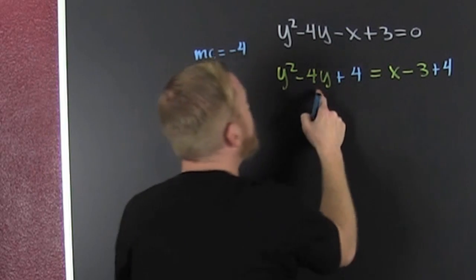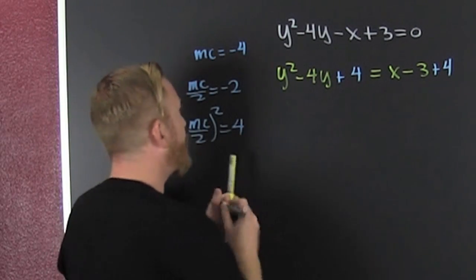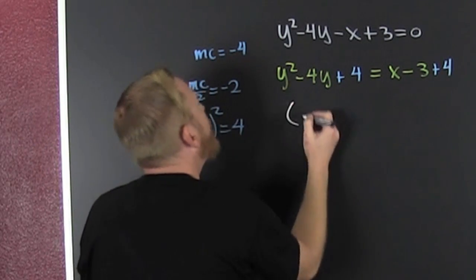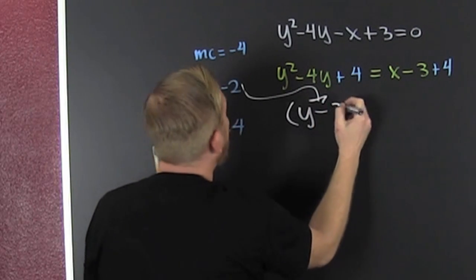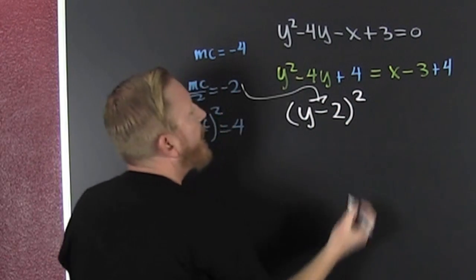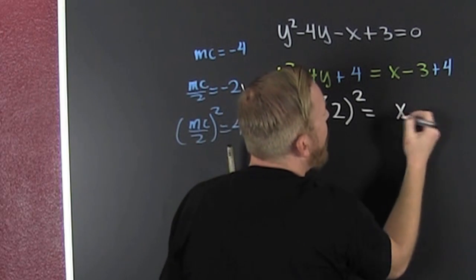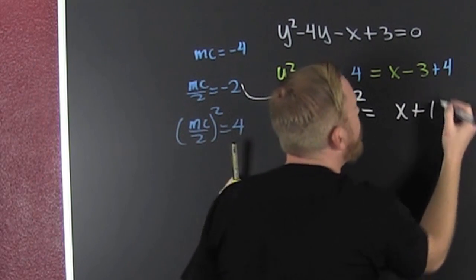Why? Because we're completing the square. This is the no-nonsense, no thinking approach to completing the square. I just go y and that guy, the middle coefficient over 2 squared. And then that's going to be x plus 1.